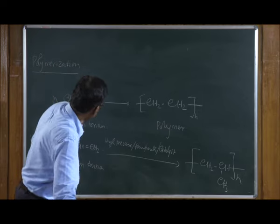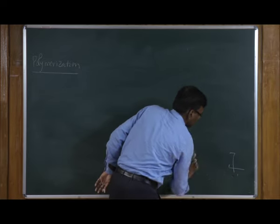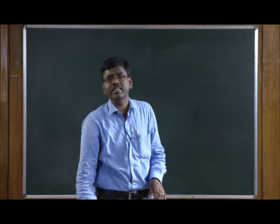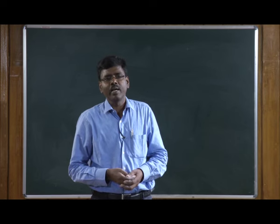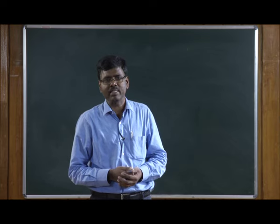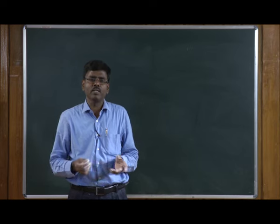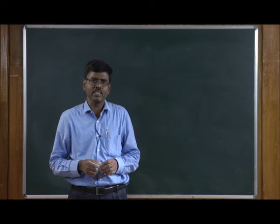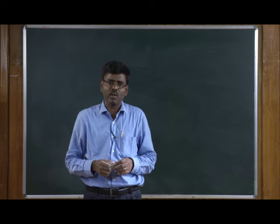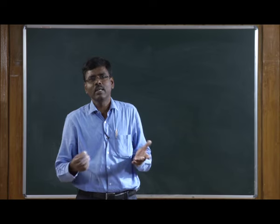Today we have studied the chemical properties of alkenes and covered several types of reactions. First, addition of hydrogen to alkenes to give alkanes — a stereospecific syn addition reaction. Then addition of halogen: iodine does not undergo addition with alkenes, but chlorine and bromine can undergo addition to give vicinal dihalo compounds. This reaction is also used as a classical test to check whether a compound is unsaturated.